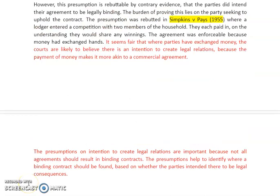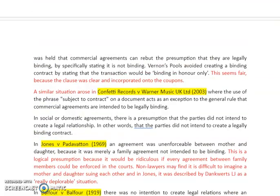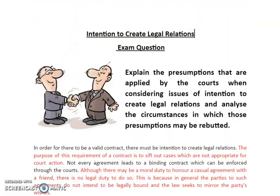We can reach a conclusion by summarising: the presumptions on intention to create legal relations are important because not all agreements should result in binding contracts. The presumptions help to identify where a binding contract should be formed based on whether the parties intended there to be legal consequences. They appear to be logical presumptions that can be rebutted, which seems fair, so that only contracts the parties want to be legally enforceable are so.